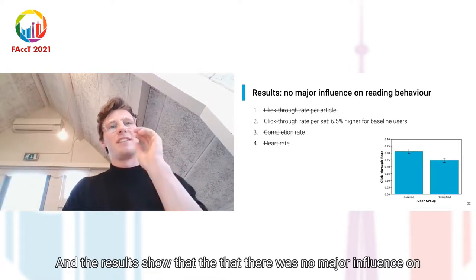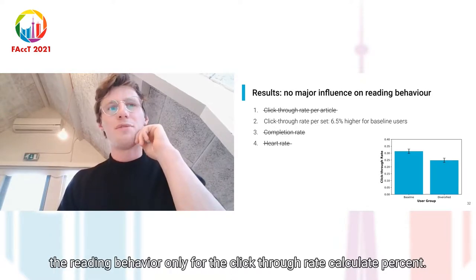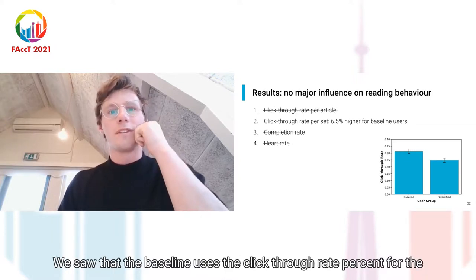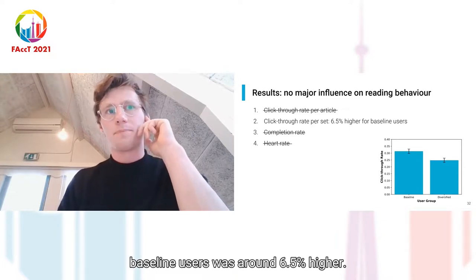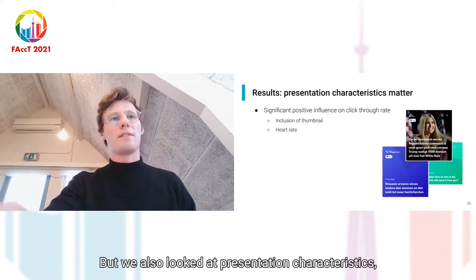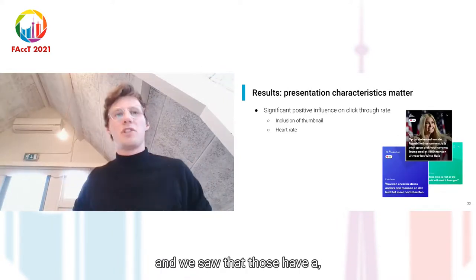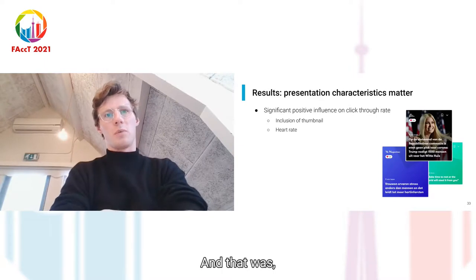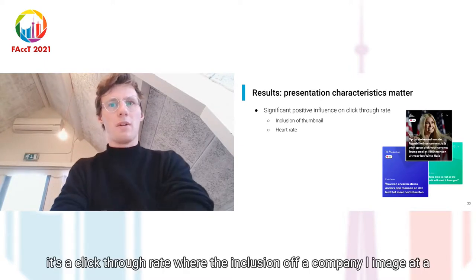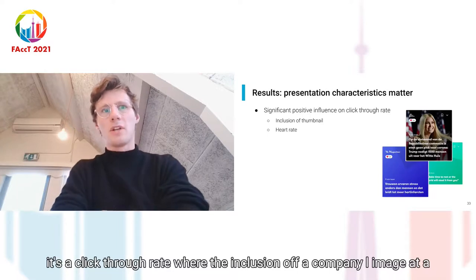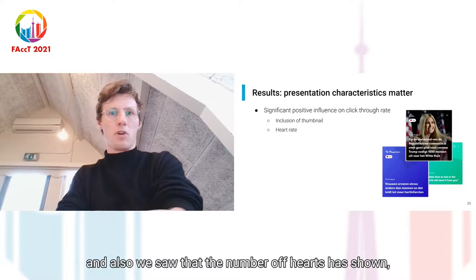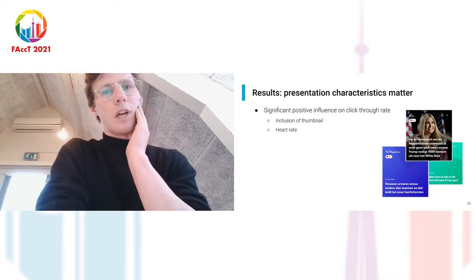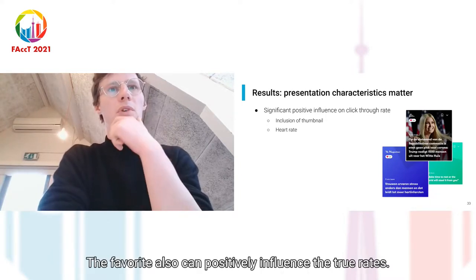We measured reading behavior according to four metrics: click-through rate per article, click-through rate per set (since users can only choose one article from the set), completion rate of recommendations as an indication of user satisfaction, and the heart rate — the number of users that selected the recommendation as their favorite by clicking on a small heart icon. The results showed no major influence on reading behavior overall. Only for click-through rate per set did we see that the baseline users had a rate around 6.5% higher. For presentation characteristics, inclusion of a thumbnail image had a positive influence on click-through rate, as did the number of hearts shown.